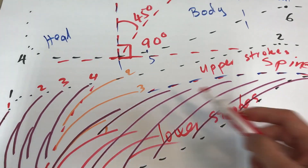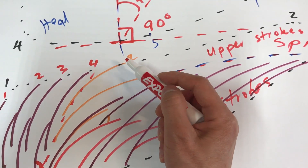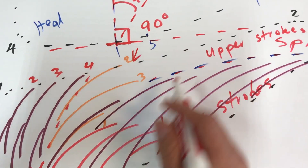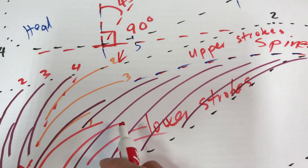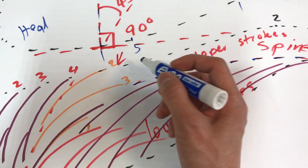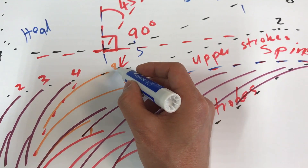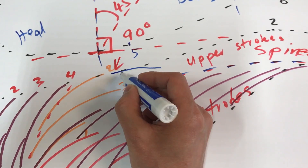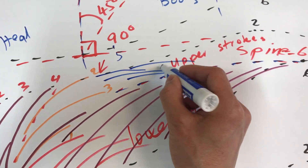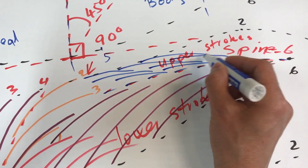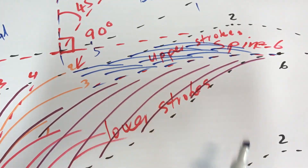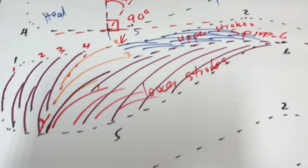And why do we have number two right here? Because that will tell you where to begin the upper stroke. The upper stroke has to start right there — that's where the upper stroke should be.